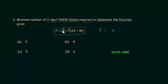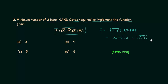First, rewrite (x-complement OR y-complement) as (x AND y)-complement. The expression becomes: (x AND y)-complement AND (z OR w). Expanding using the distributive law gives: [(x AND y)-complement AND z] OR [(x AND y)-complement AND w]. This is the simplified form. Now implement this function using two-input NAND gates to find the minimum number of gates required.